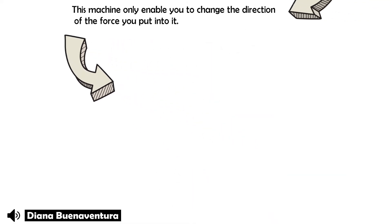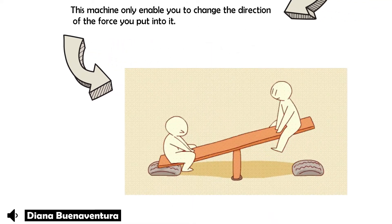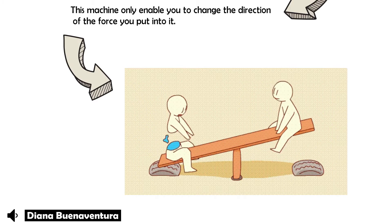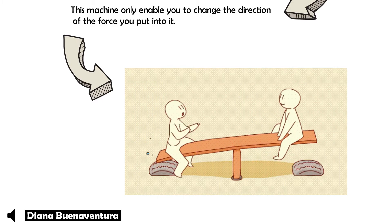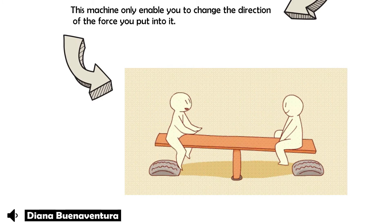For example, Erica and Shuri are playing on a seesaw. When Erica applies force, Shuri goes up. Then when Shuri applies force, Erica goes up. Only the direction of the force changes.